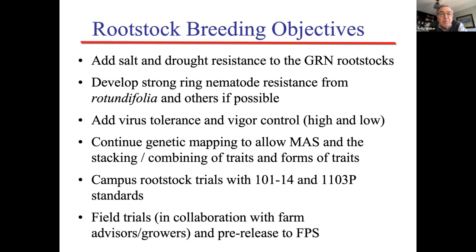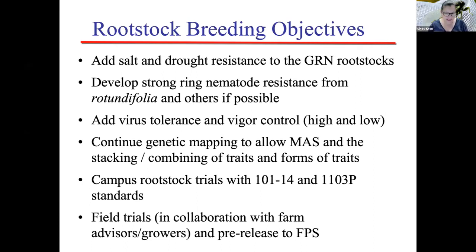So what are our final objectives for the future? We want to combine salt and drought resistance with the GRN resistances to nematodes. We want to get a better idea of rotundifolia and a few other species in terms of their dagger nematode and fanleaf tolerance and resistance. We need to get virus tolerance and vigor control in one package — getting away from excessively vigorous materials. We want to map and develop tools to more rapidly screen these rootstocks. We're now putting in trials on campus to look at these things horticulturally, and then they go to field trials with collaborators and farm advisors as the last step. I think I'll end there and answer a few questions.